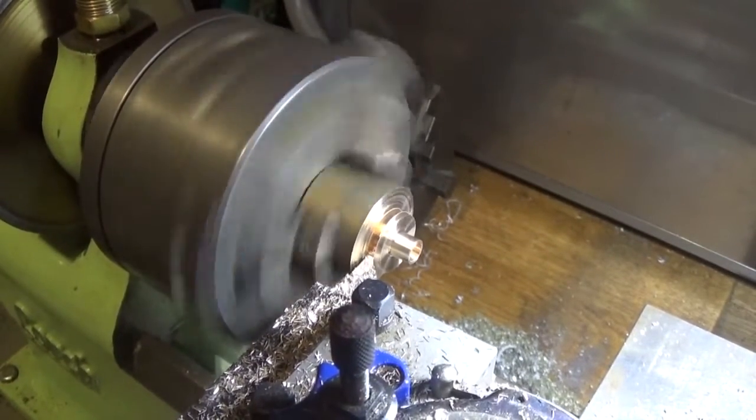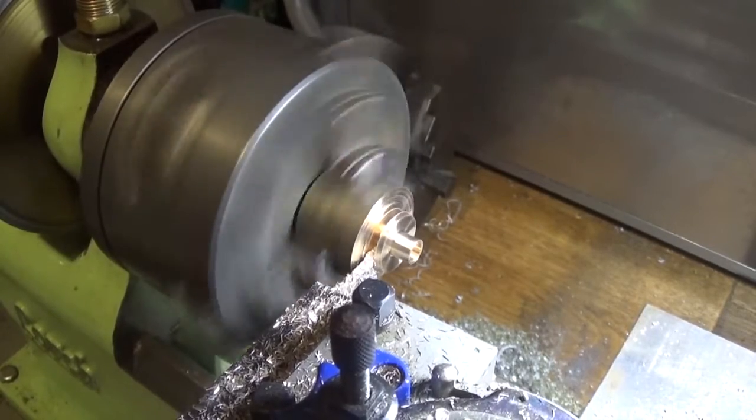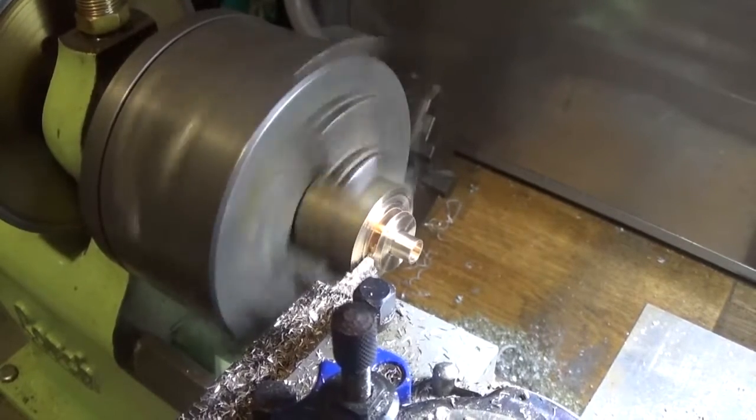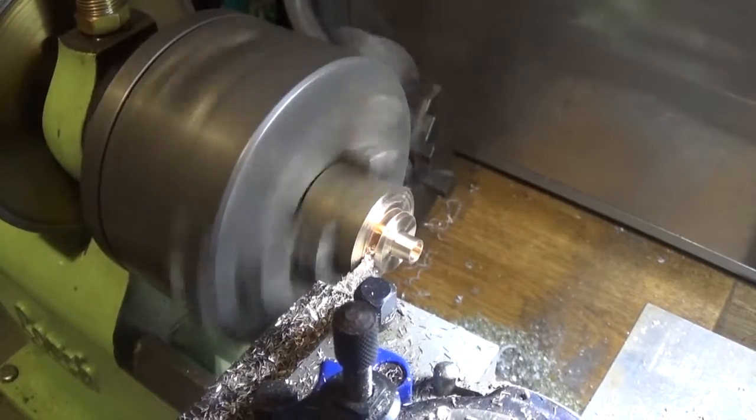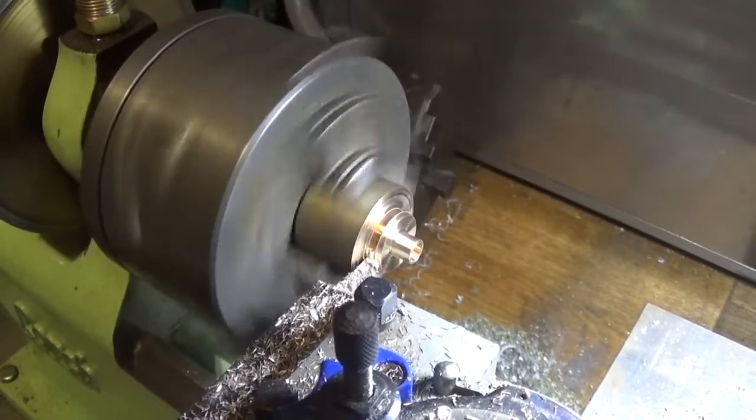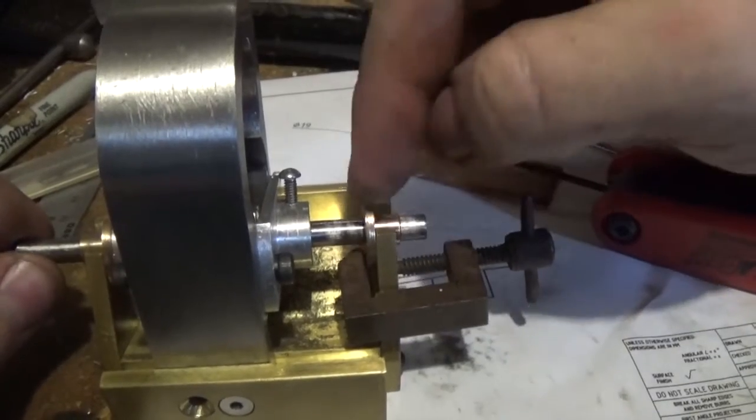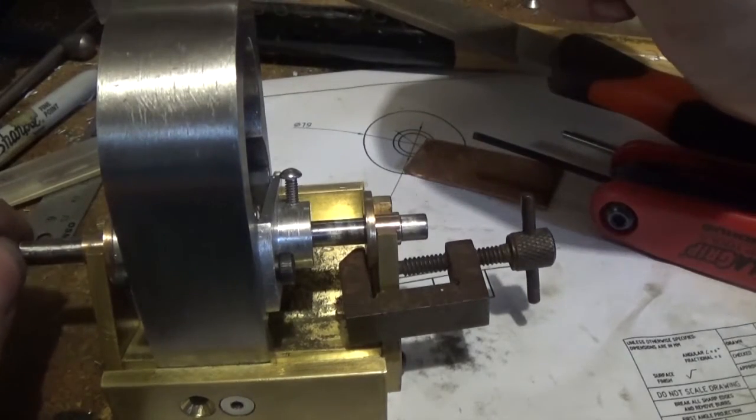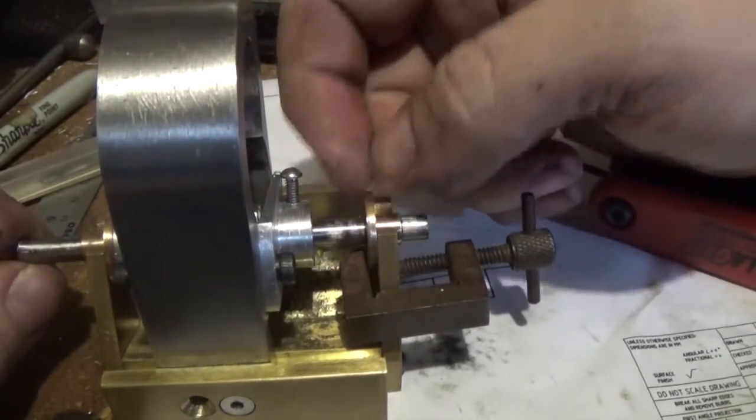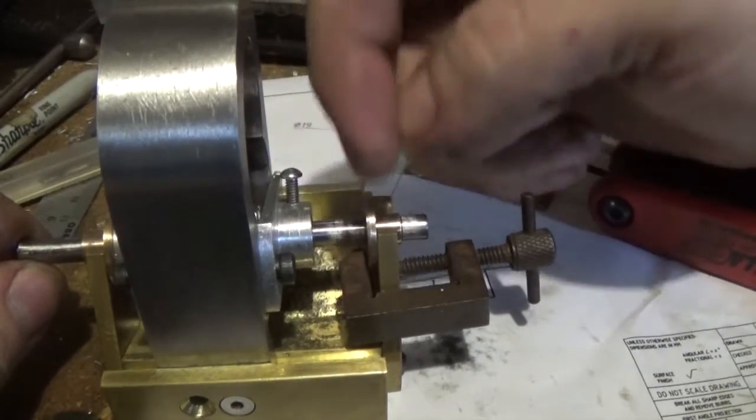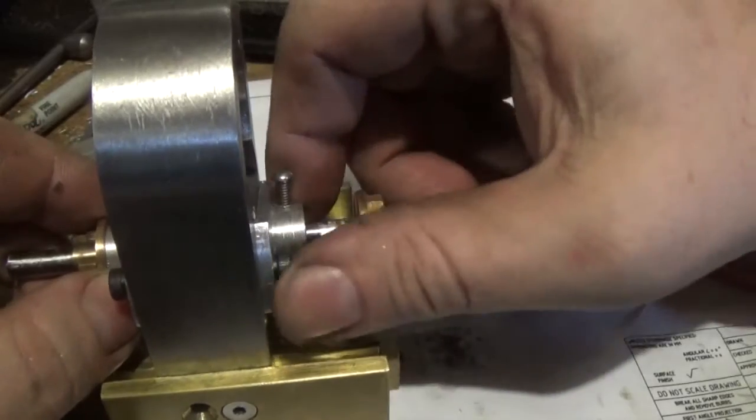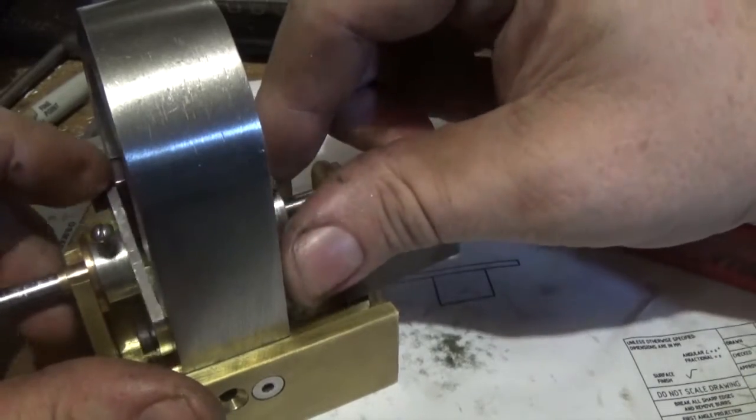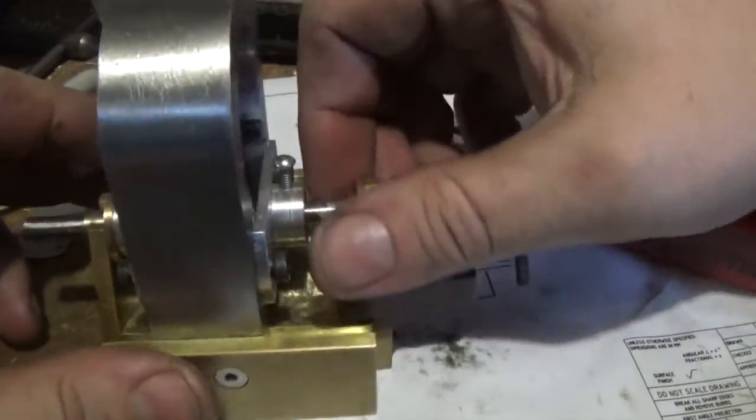I've got the bushes faced off and reamed through. If you want to know how I faced the back of them, the answer is very carefully. They're not very thick and I've just faced them down so they're both the same, and that gives us about central magnet clearance in there.